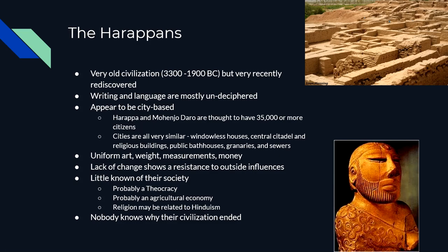Because their writing is pretty undeciphered, a lot of what we have theorized is based off of archaeological evidence, anthropology, and historical theory. We're fairly certain it was a city-based culture, fairly large and spread out. Their culture was spread out over an area larger than modern-day Pakistan. The two cities that look to be the most important are Mohenjo-Daro and Harappa, and they weren't very big — I'm talking like 35,000 to 40,000 people.